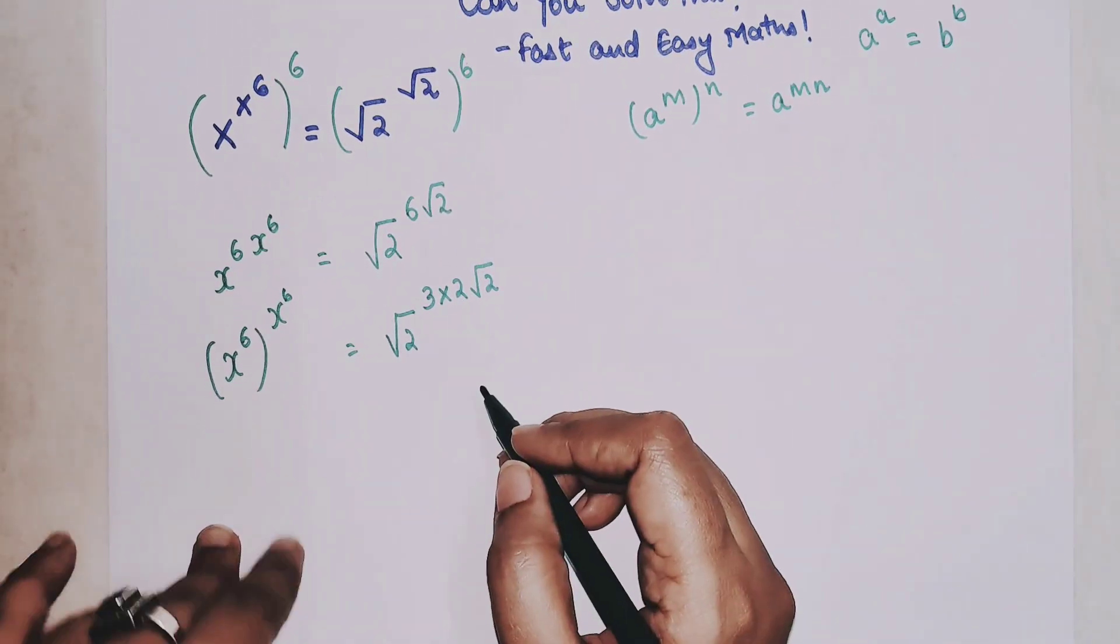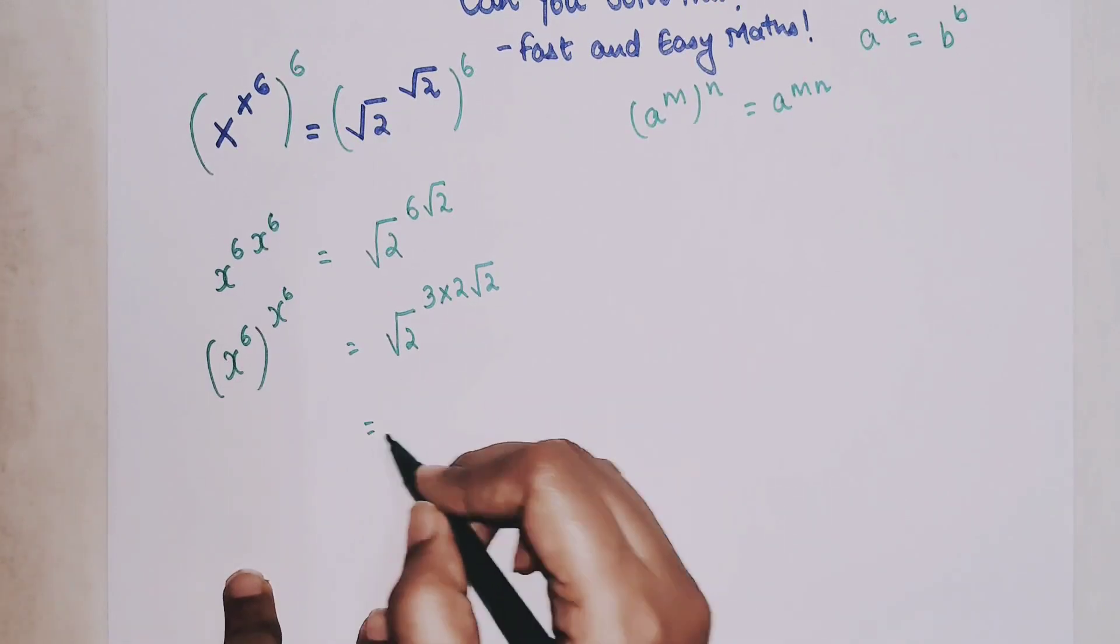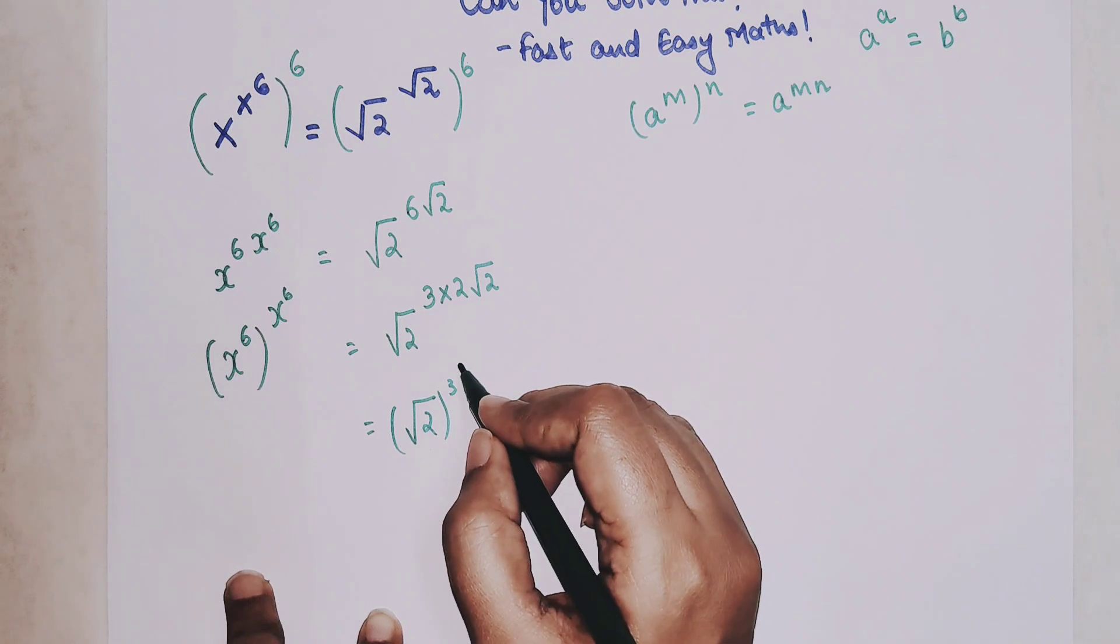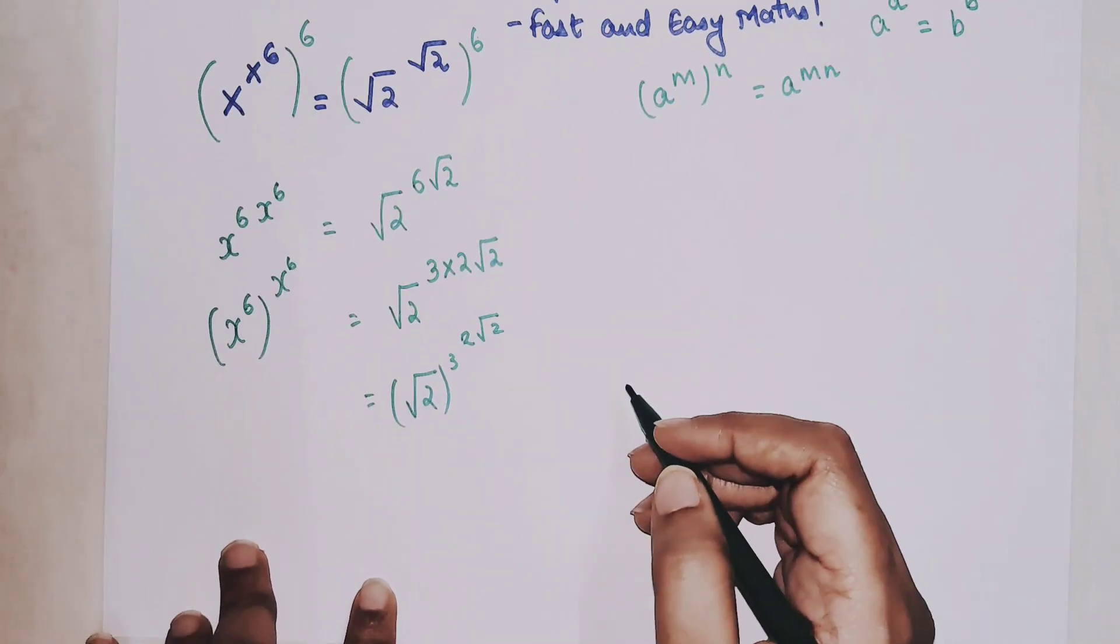But now after this I can't do anything. So let's try and write this as root 2 the whole cube the whole raised to 2 root 2.